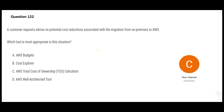Let's jump into this question. You as a customer want to move from on-premises to AWS cloud. Someone is moving from on-prem to AWS and they want to know what the cost reduction would be. What will you use? It's simple — you will use a calculator.